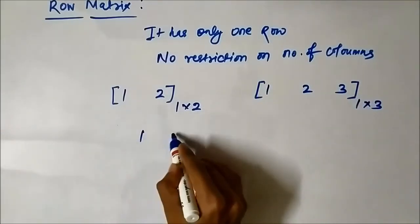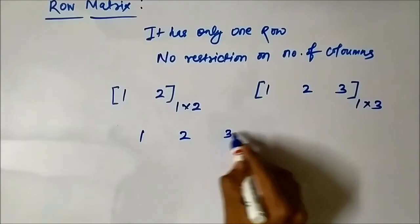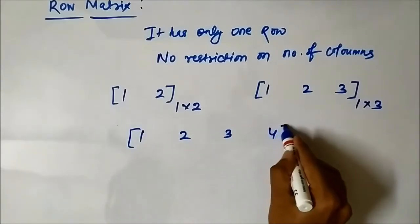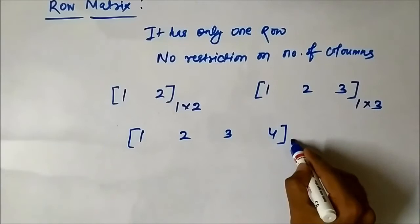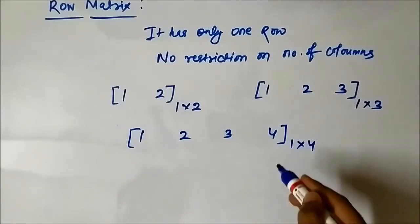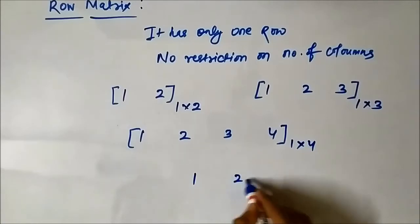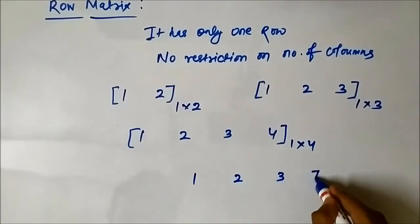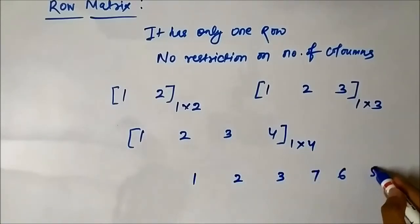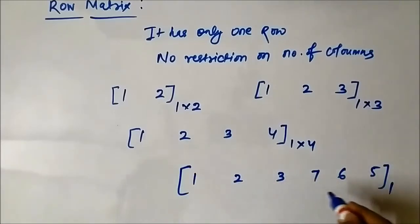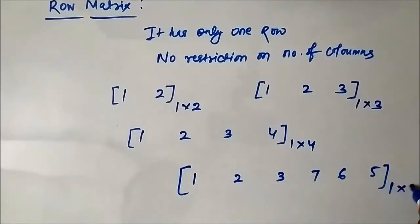Similarly, [1, 2, 3, 4]. Here, the number of rows is 1, but the number of columns is 4. Similarly, [1, 2, 3, 7, 6, 5]. Here, the number of rows is 1 and the number of columns is 6.